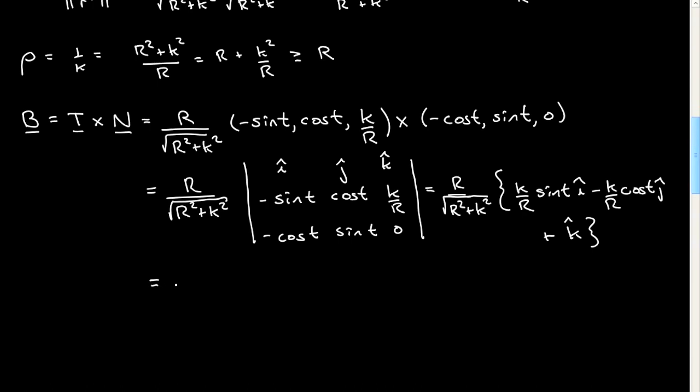I will go ahead and pull a k out of that as well. I'll just write the answer. So this is our vector B, our binormal vector.